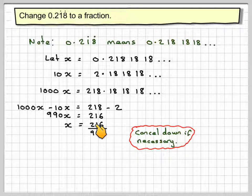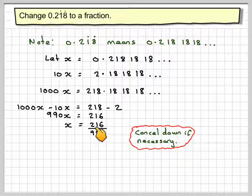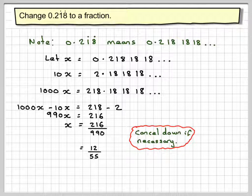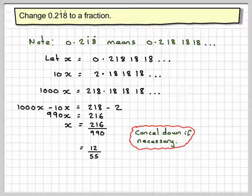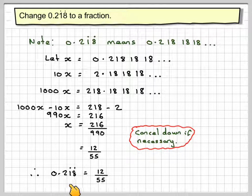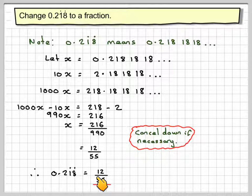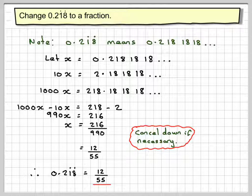Or you could put this in your calculator as a fraction, and it will cancel it down for you. You get an answer of 12 over 55. So 0.218 recurring equals 12 over 55.